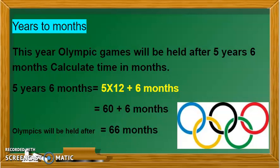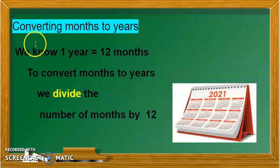Now, let us do the reverse of it. That means converting months is given and you have to convert it into years. We know that 1 year is equals to 12 months. So, to convert months to years, we will divide the number of months by 12.